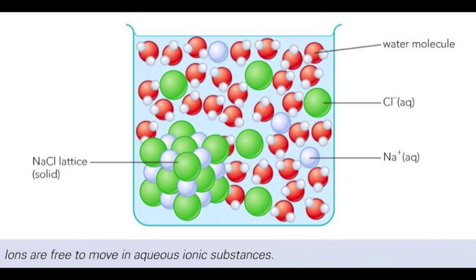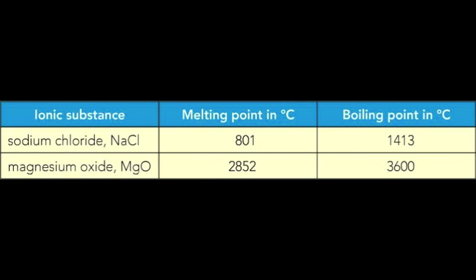The melting point of a substance is the temperature at which it changes from a solid to a liquid. Its boiling point is the temperature at which it changes from a liquid to gas at its fastest possible rate.